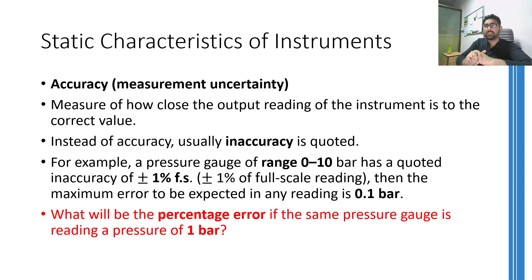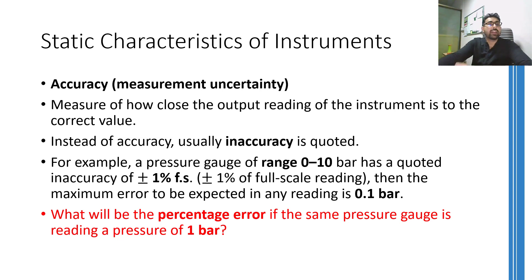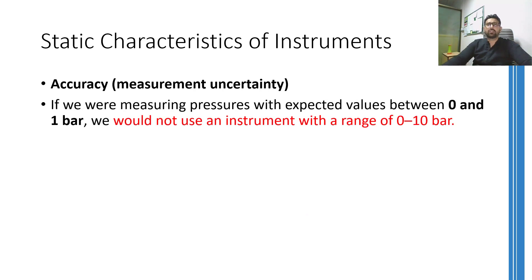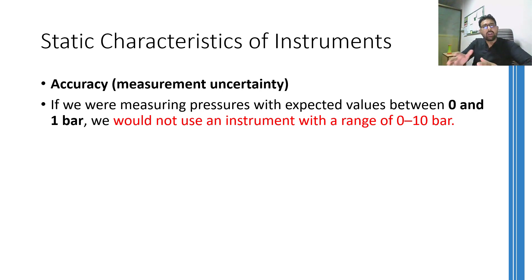If the same pressure gauge is reading a pressure of 1 bar, the error would be 0.1 bar, and hence the percentage error would be 10% because 0.1 bar is 10% of 1. The main point here is: don't use an instrument having a range of 0 to 10 bars to measure lower pressures, because it will give you a large error percentage. For measuring pressures around 1 or 2 bars, use an instrument with a full range of 2 or 3 bars maximally.